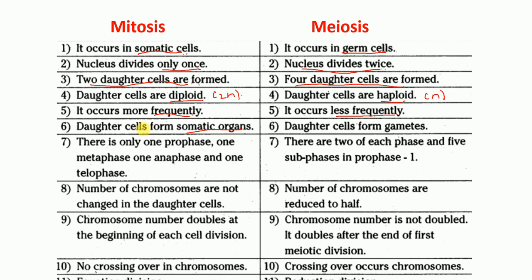In mitosis cell division, the daughter cells form somatic organs. Whereas the daughter cells from meiosis cell division form gametes. In mitosis cell division, there is only one prophase, one metaphase, one anaphase, and one telophase. Whereas in meiosis cell division, there are two of each of these phases because it occurs two times, and there are five sub-phases in prophase 1.